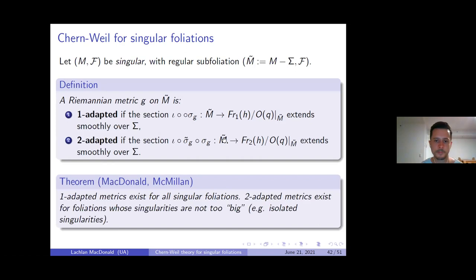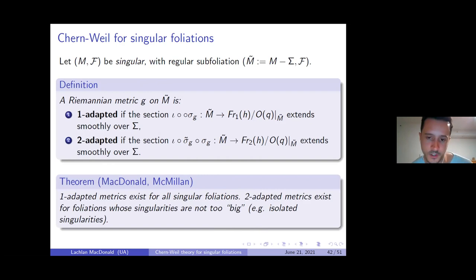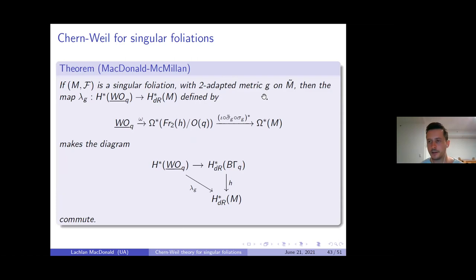This leads to our main definition: a Riemannian metric is one-adapted if the section of one-frames extends smoothly across singularities when mapped to the Haefliger bundle, and two-adapted if it extends to a smooth section of the Haefliger two-frame bundle across singularities. One of the main theorems of our paper is that one-adapted metrics exist for all singular foliations. Two-adapted metrics are trickier — we were only able to prove they exist for foliations whose singularities are localized within single Haefliger charts.